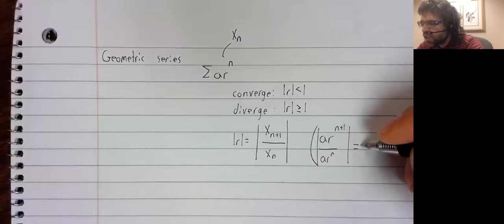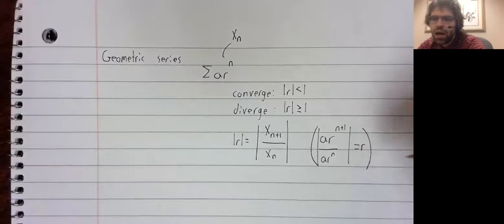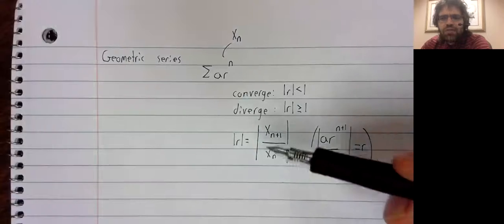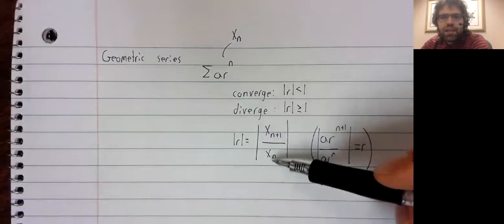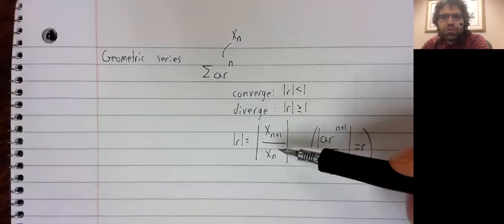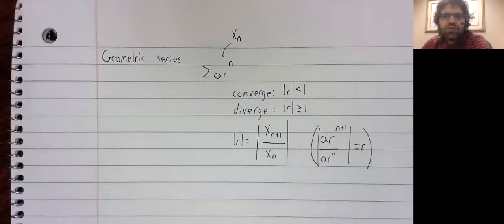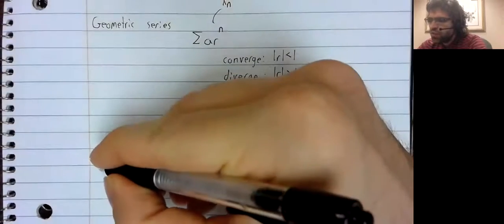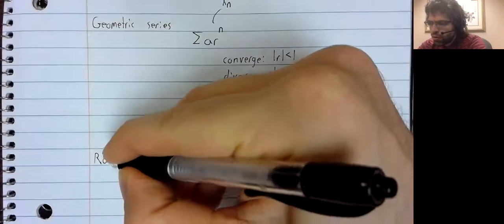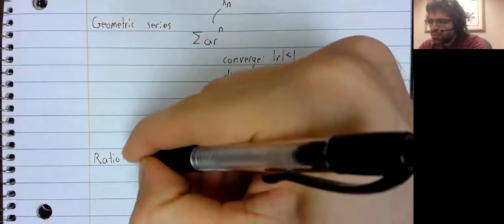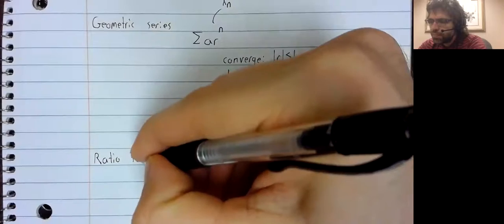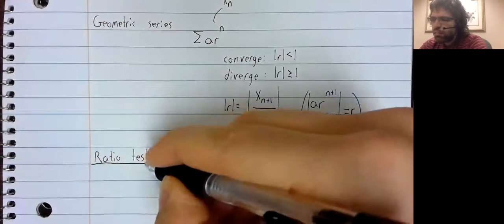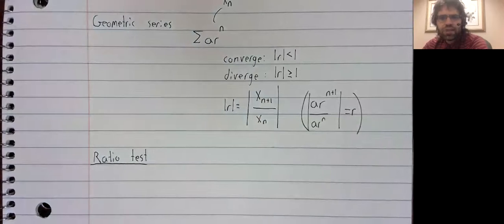And this genuinely is R. So that gives us the idea that we might be able to use this ratio to study the convergence or divergence of other series. And from this comes the ratio test.